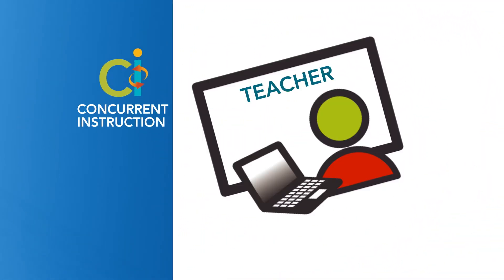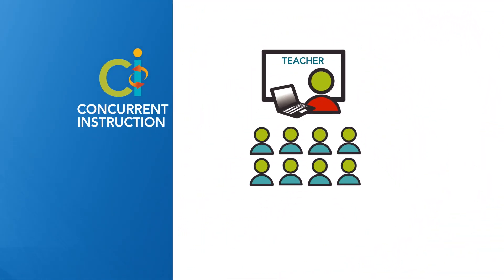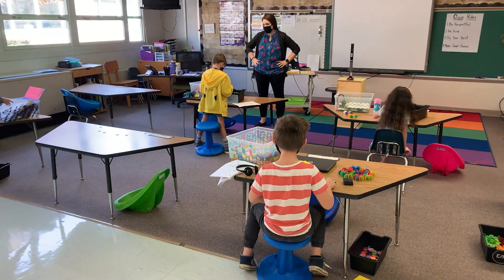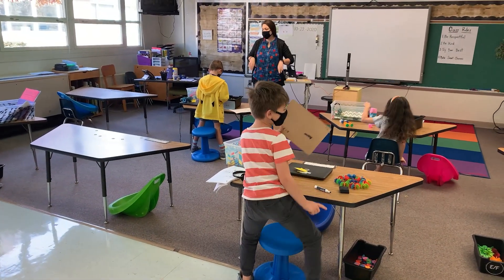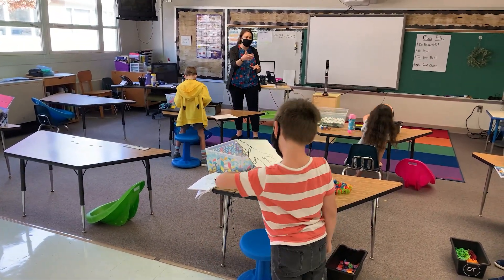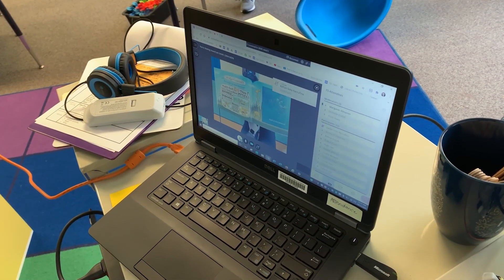A concurrent model is one in which instruction is accessible by students in school and at home at the same time. It's important that both groups of students are part of the classroom experience regardless of where they are physically.